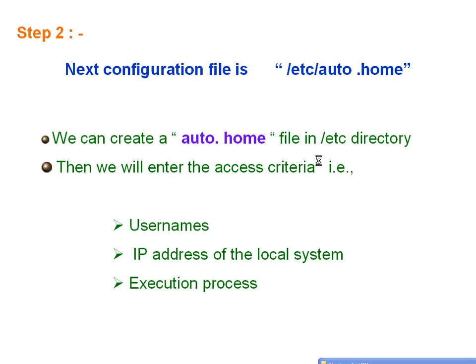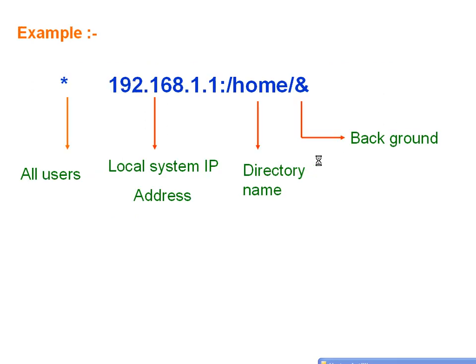Step number three: the next configuration file is /etc/auto.home. We can create an auto.home file in the /etc directory, then enter the access criteria — that is, we have to enter usernames, the IP address of the local system, and the execution process. For example: star (indicating all users), 192.168.1.1 (the local system IP address), /home (the directory name), and ampersand representing the background process.